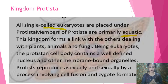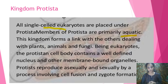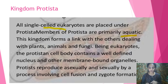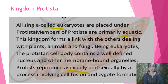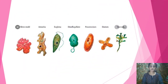Eukaryotic organisms have a well-defined nucleus and membrane-bound organelles — this is the main differentiating feature from prokaryotes. In prokaryotes there is no proper nucleus and no membrane-bound organelles, but in eukaryotes both are present. Protista reproduce asexually or sexually by fusion or gamete formation. Some examples include slime molds, amoeba, euglena, dinoflagellates, paramecium, diatoms, and macroalgae.